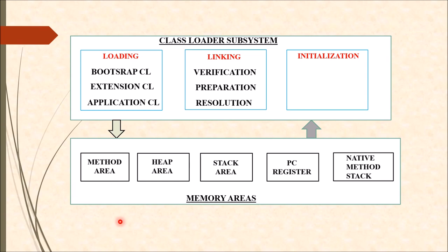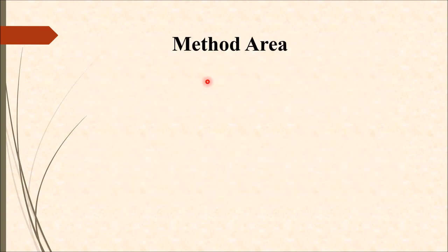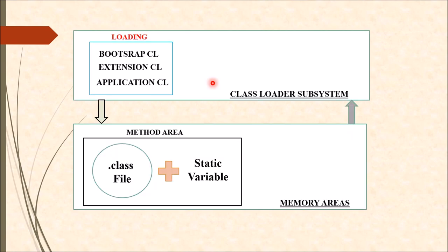First, let's start with the method area. This method area is mainly responsible for storing all the dot class files present inside our Java application. Whenever we compile our Java application we get the dot class file, and this dot class file will be stored inside this method area. Along with these, whatever static variables are inside our Java application will also be stored inside this method area. There is only one method area inside the entire JVM architecture.